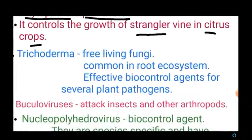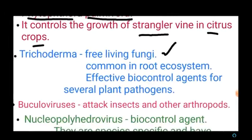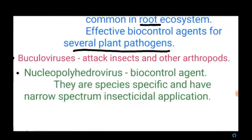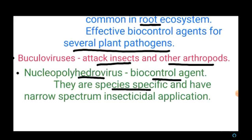Trichoderma is a free-living fungus commonly found in plant roots and is an effective biocontrol agent for several plant pathogens. Baculoviruses attack insects and other arthropods. Nuclear polyhedrosis virus is one of the best biocontrol agents because it is species-specific, with a narrow spectrum of insecticide application — it attacks only insect pests and not useful insects.